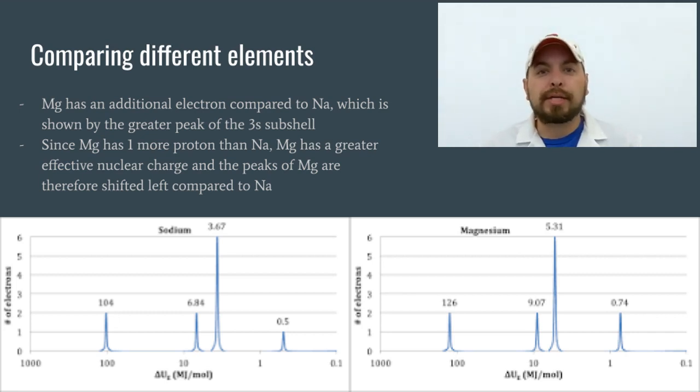So if we look at the PES diagram, I can see that extra electron in that 3s sublevel peak, where in the sodium, it's the height of one. In the magnesium, it would be the height of two, right? Double that height means twice as many electrons. In this case, it would be two electrons.